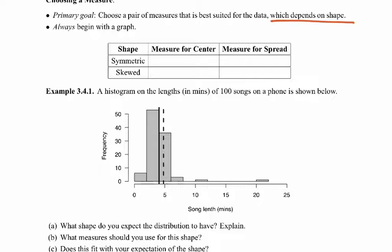You always want to start by looking at a graph and making a decision based on what the graph looks like. If it's symmetric, use the mean for center and standard deviation (SD) for spread. If it's skewed, use the median for center and the IQR for spread.